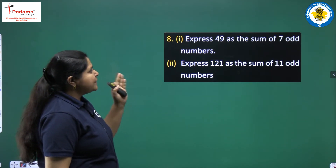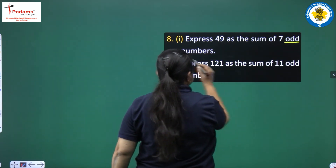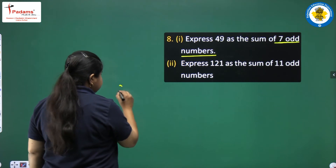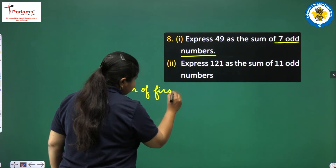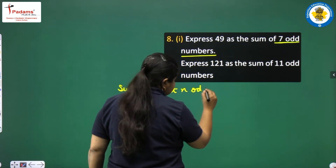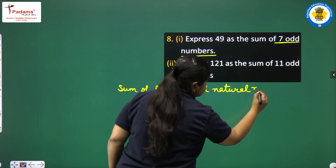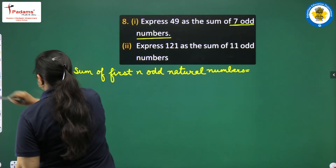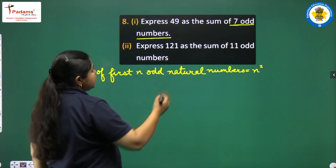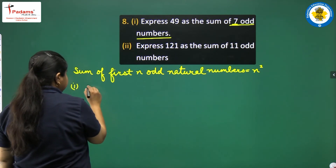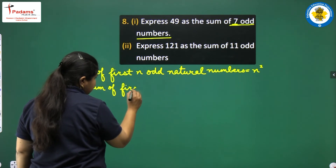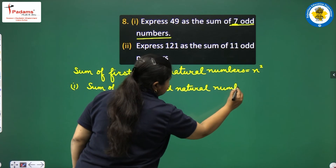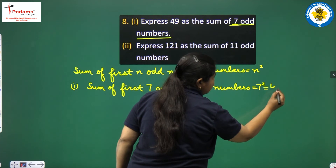Express 49 as the sum of 7 odd numbers. Again, odd numbers are being discussed here and we need to take 7 odd numbers. We know that the sum of the first n odd natural numbers — starting from 1 — is equal to n squared. So the sum of the first 7 odd natural numbers equals 7 squared, which equals 49.